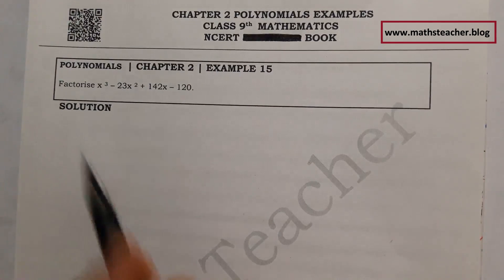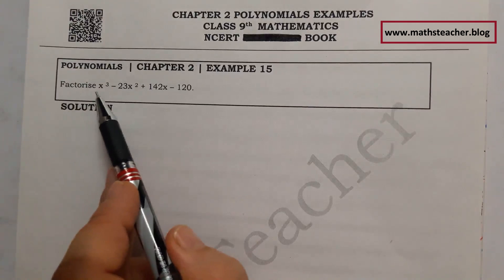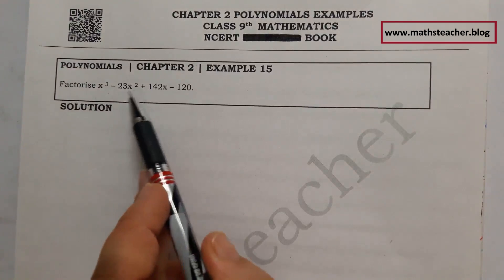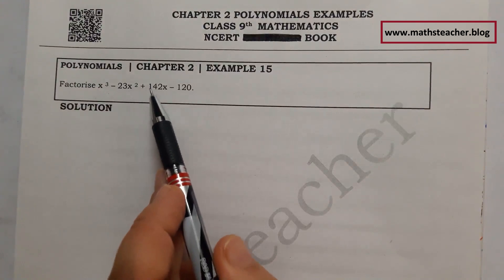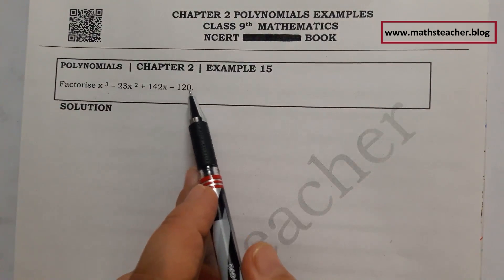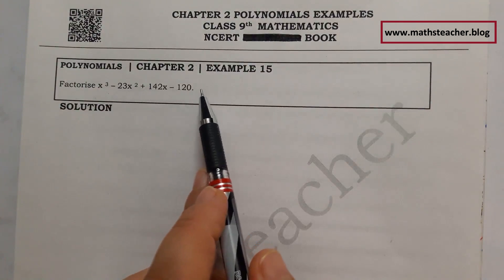The question is: factorize x cube minus 23 x square plus 142 x minus 120.